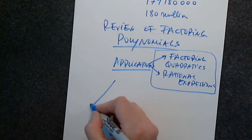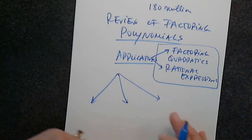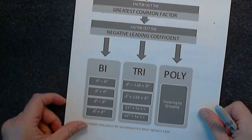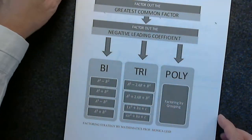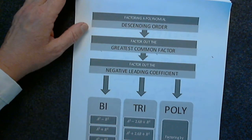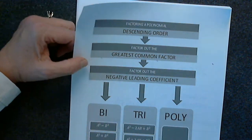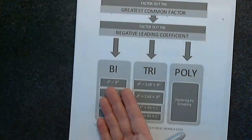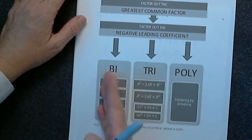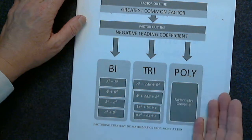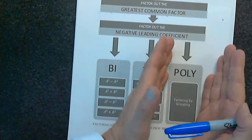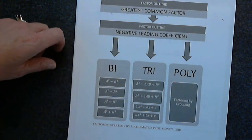So factoring polynomials — there are three different situations, and you see them here. These are the three situations. Once you understand this table or chart that I created, then you'll have zero difficulties with factoring. There are three different situations: when we factor a binomial, when we factor a trinomial, when we factor a polynomial. They cannot be combined — they are completely three different categories and have to be treated completely differently.